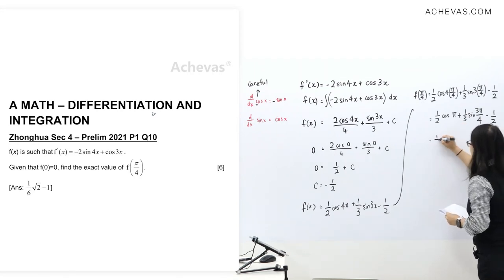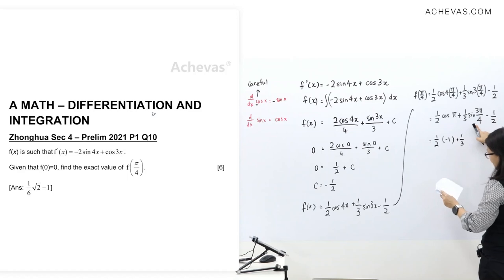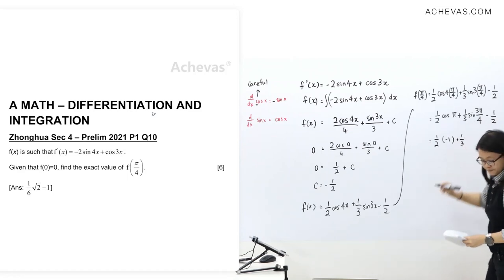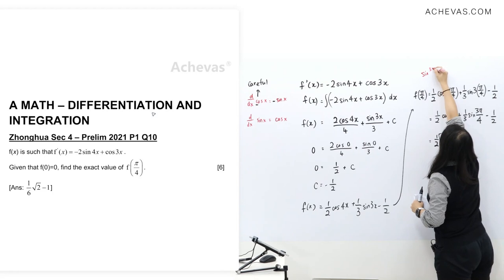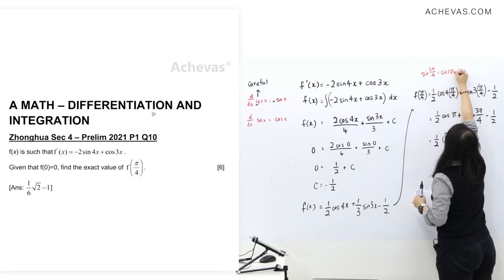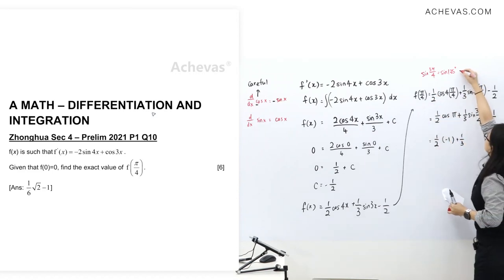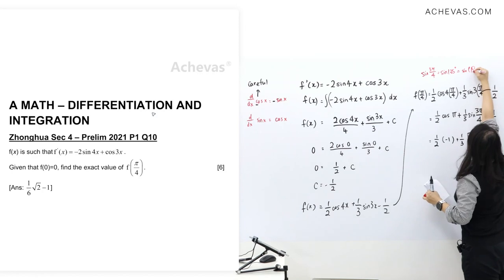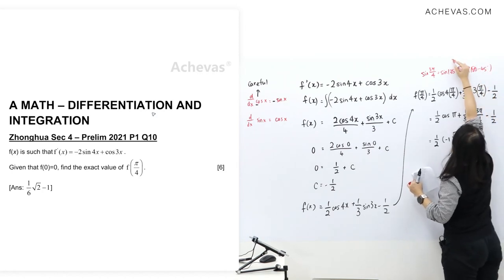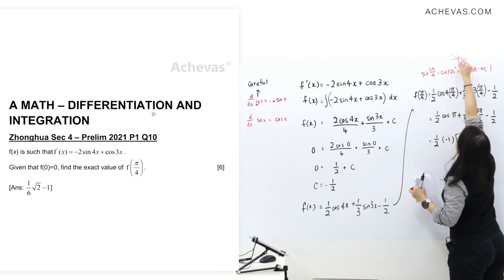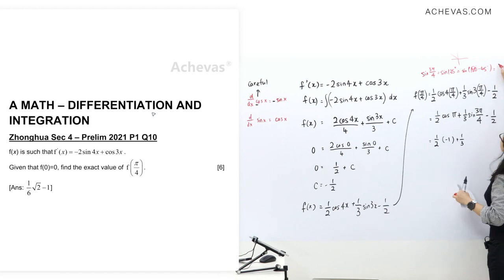This value here is negative 1. So this sine 3π/4 here, if you're going to check this value, this is trigonometry chapter. It's also equal to sine 135 degrees, which is sine of 180 minus 45 degrees. So it's still positive value. Sine of 45 degrees, so we have actually 1 over square root 2.